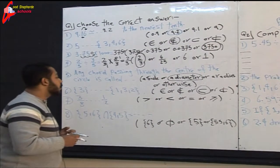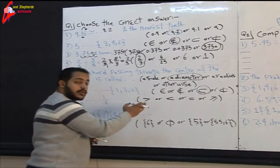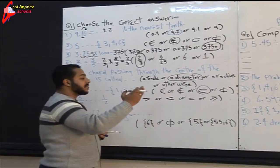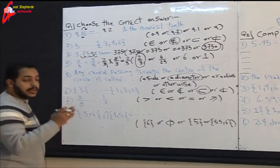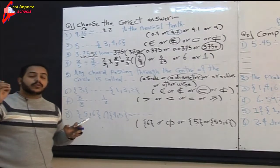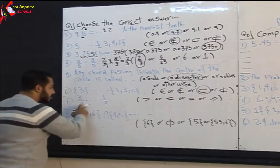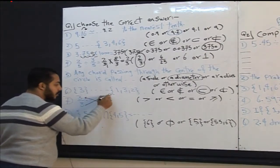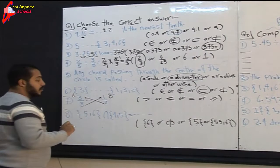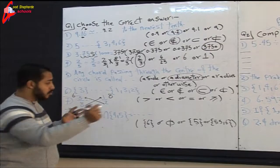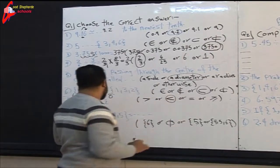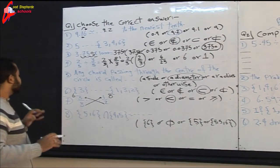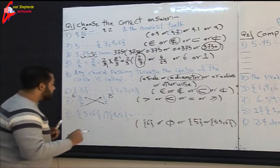Question seven: compare 3/8 and 1/2 — greater than, less than, equal, or greater than or equal? We use cross multiplication: 8 times 1 equals 8, and 2 times 3 equals 6. Eight is greater, so 3/8 is less than 1/2. We choose less than.